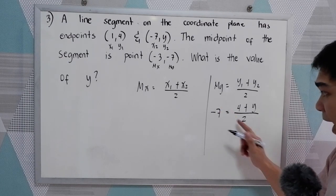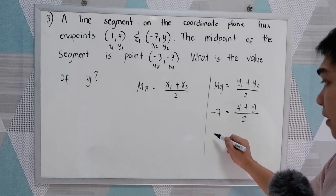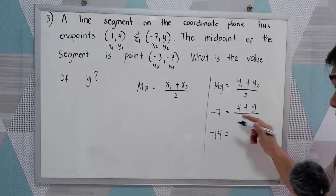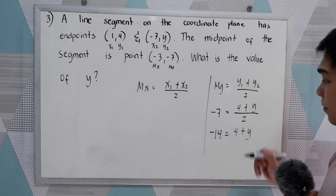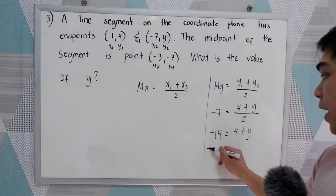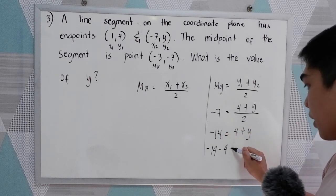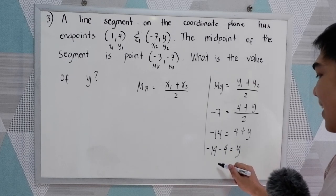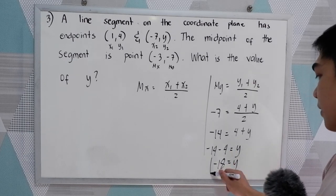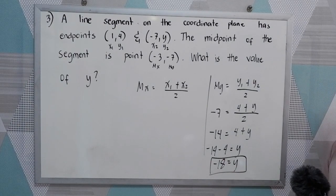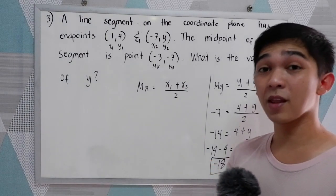Cross multiply: 2 times negative 7 gives us negative 14, which is equal to 4 plus y. By the addition property of equality, negative 14 minus 4 is equal to y. So negative 14 minus 4 is negative 18, which equals y. So the value of y is negative 18. That is our problem number 3.